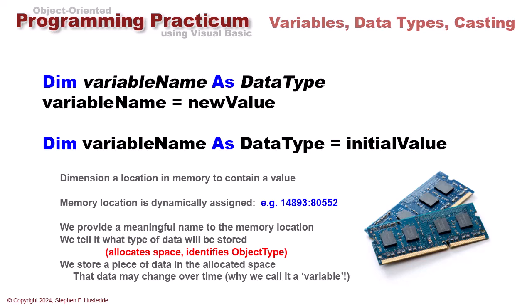We tell it what type of data is being stored. The data type, of which there are many different types we'll look at in just a second, allocates a certain amount of space in memory to contain that data but also identifies that variable as a particular object type—an instance of a class.